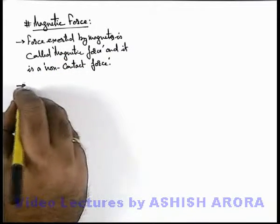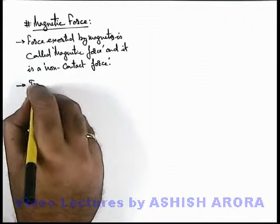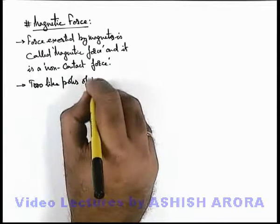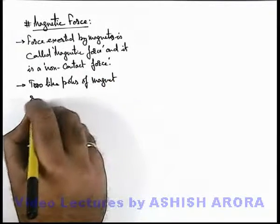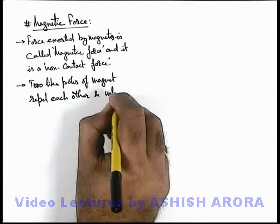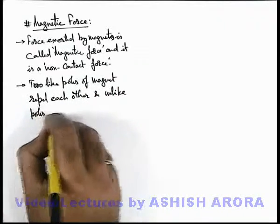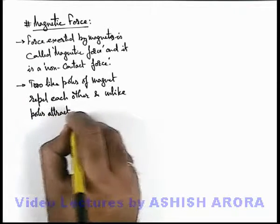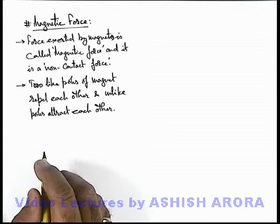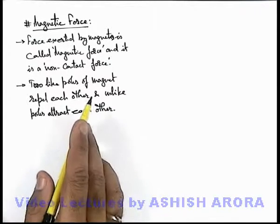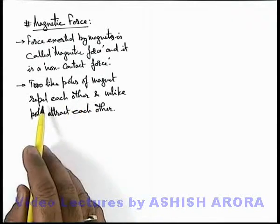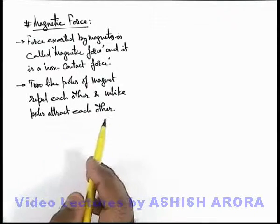About magnetic force we can also write that 2 like poles of a magnet repel each other, and unlike poles attract each other. This activity you might have experienced in your early age also. A magnet has 2 poles — one is a north pole and the other is a south pole. So 2 similar poles always repel each other and opposite poles or unlike poles attract each other.